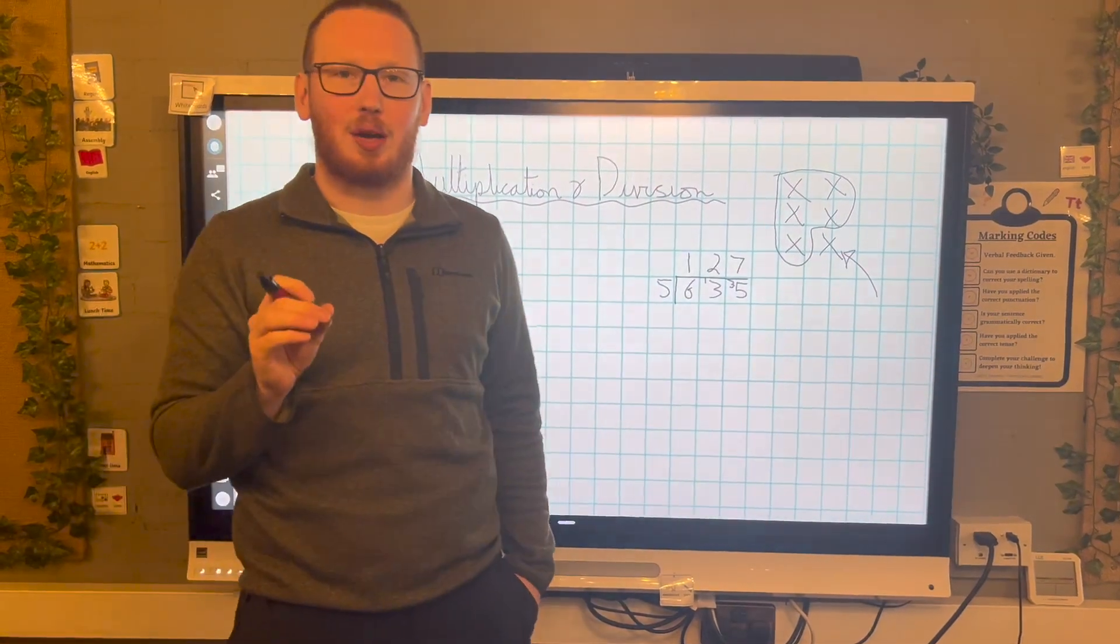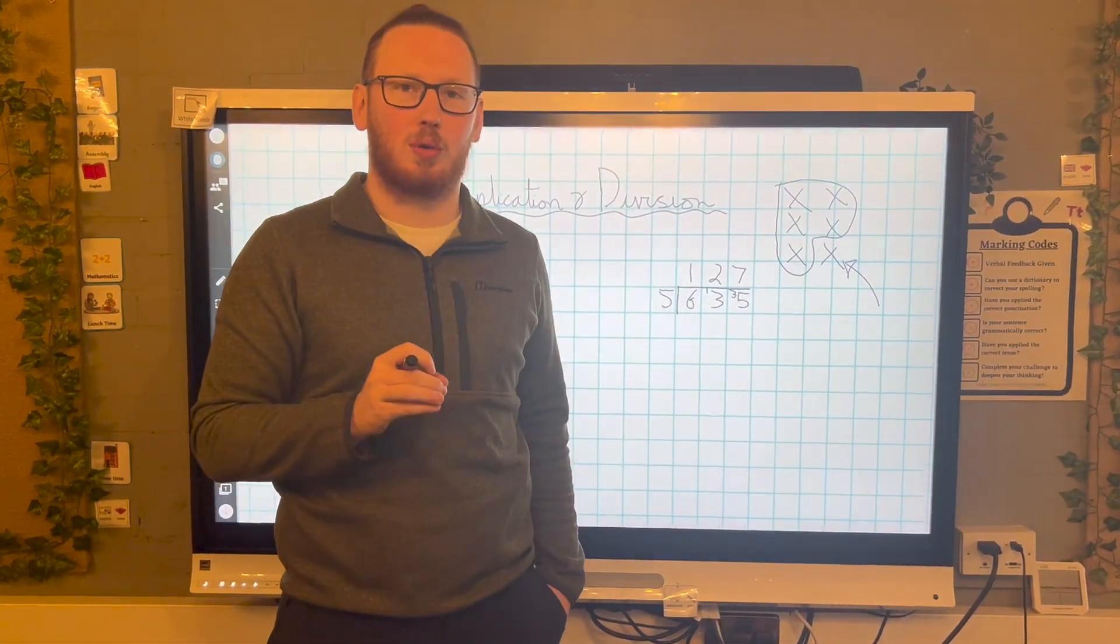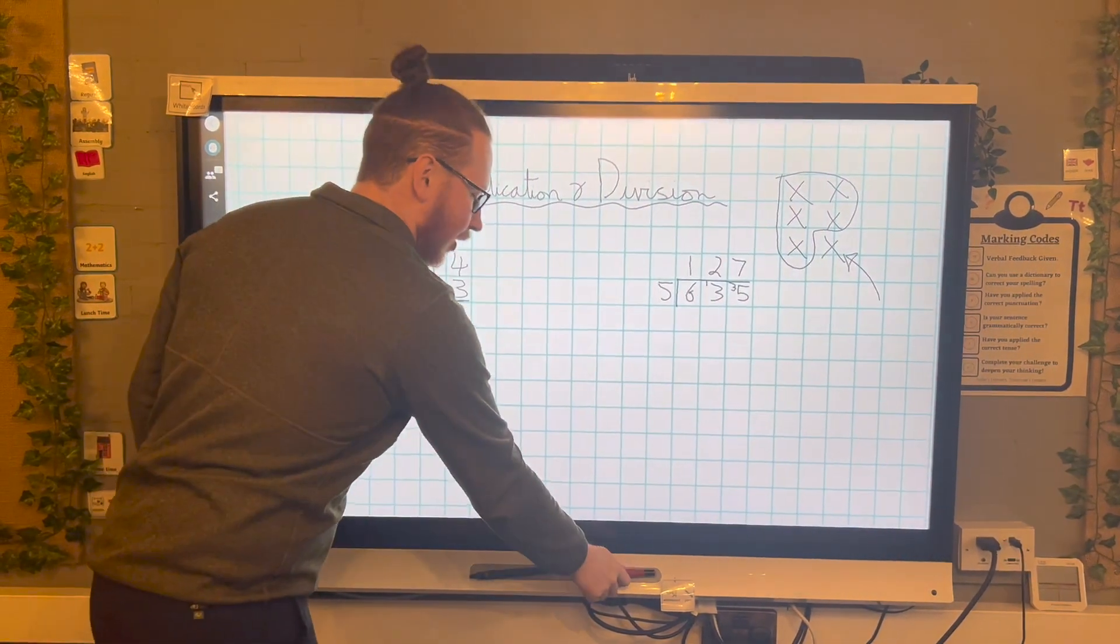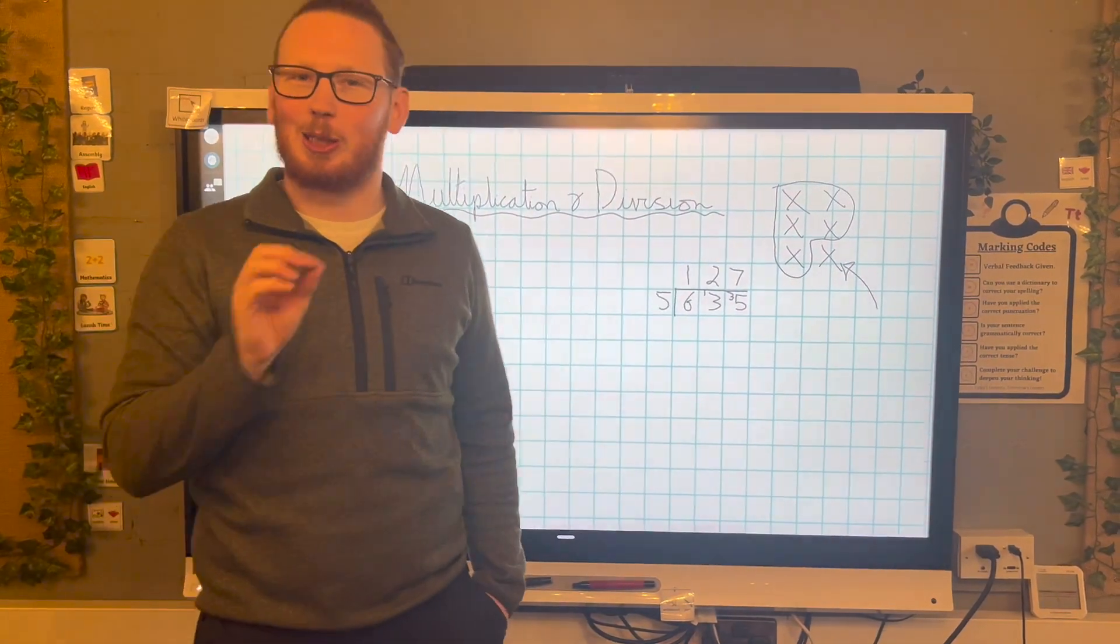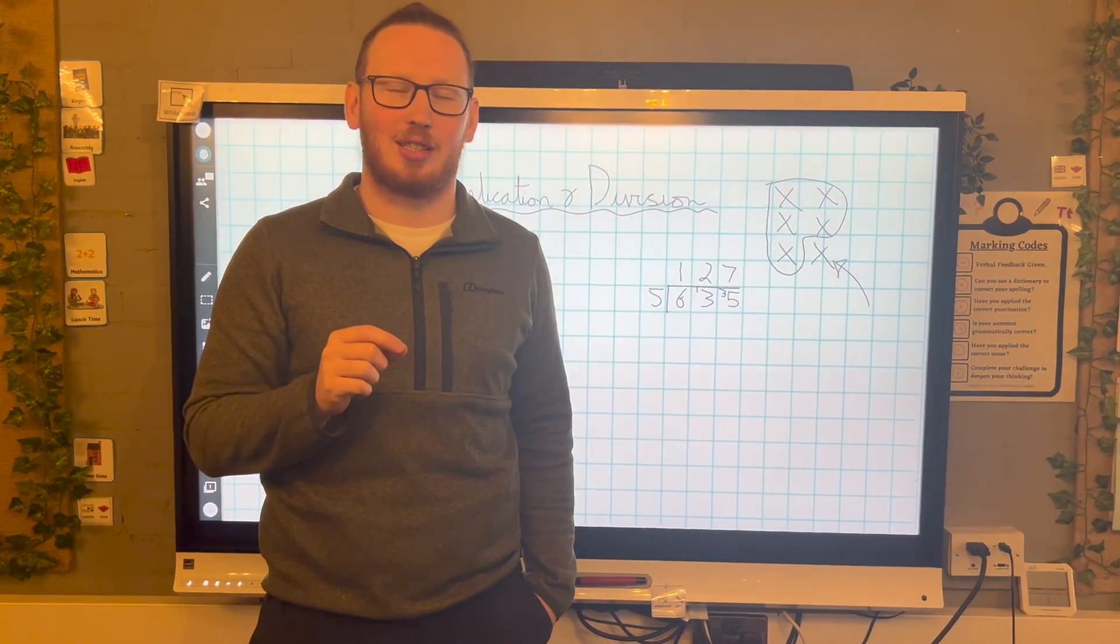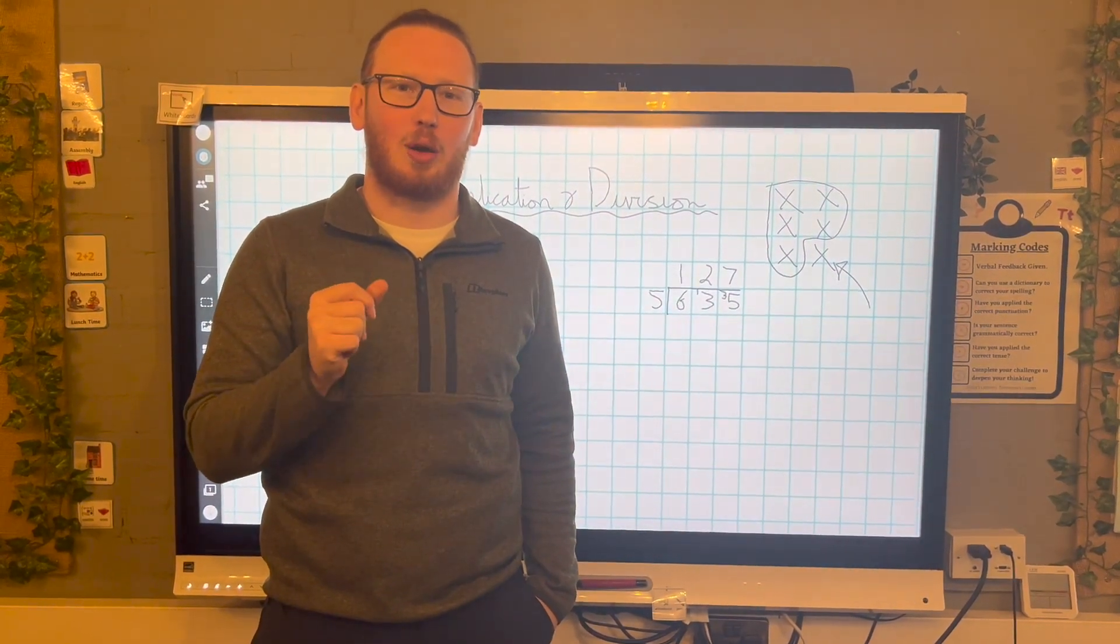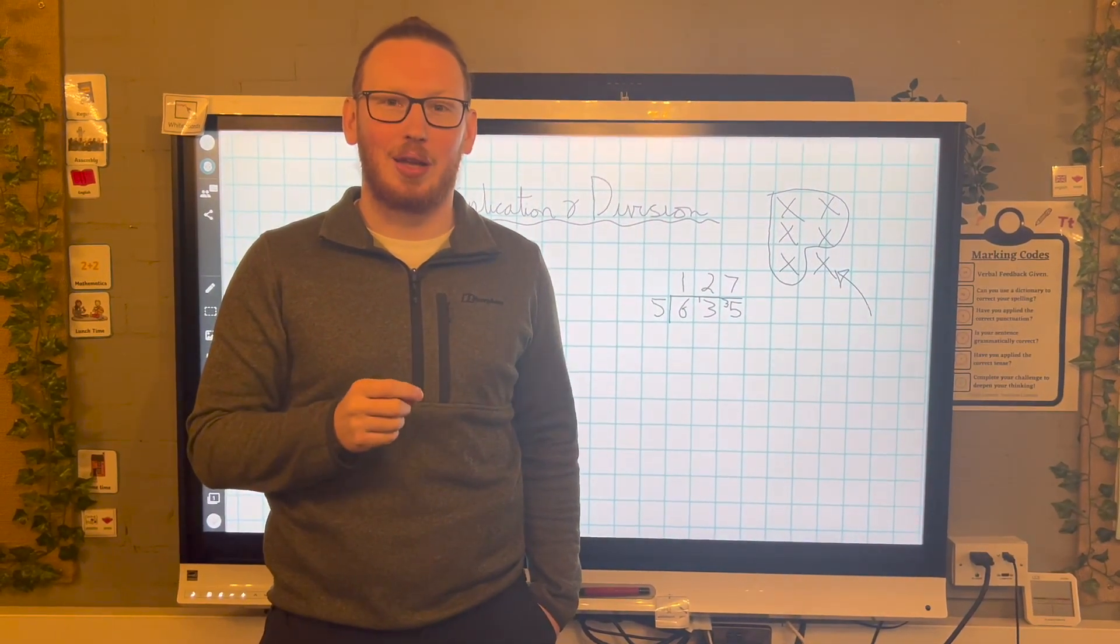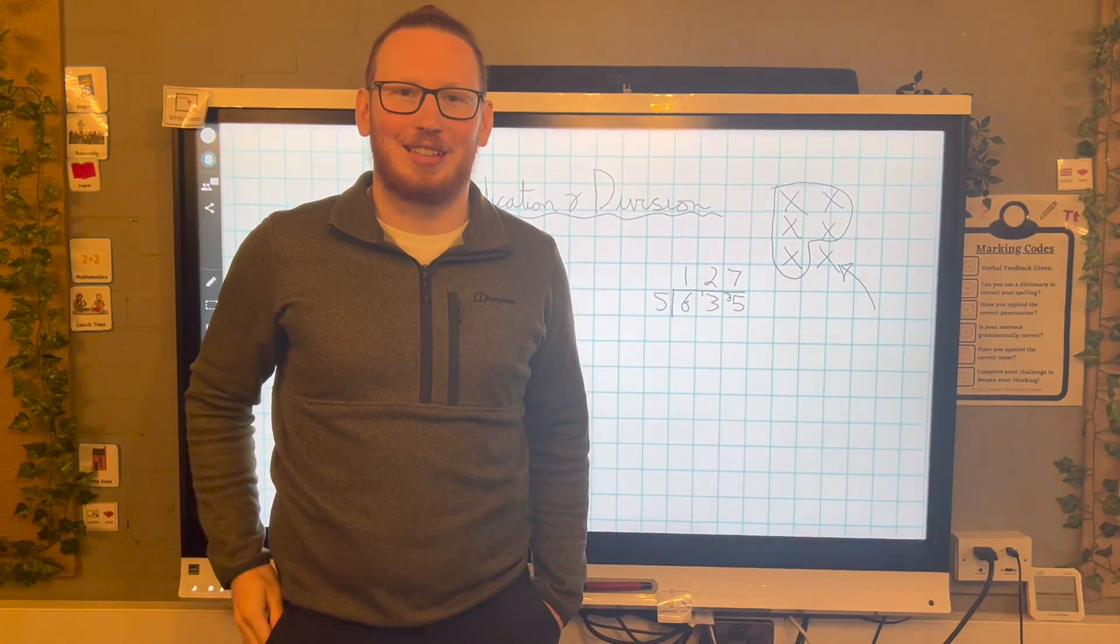So 635 divided by five is 127. So again, as I've gone on before, times tables, just as important as it has been previously. Make sure we are getting onto that Times Table Rock Stars. We're getting quicker and it will definitely help you with your learning this half term. See you later, Griffins.